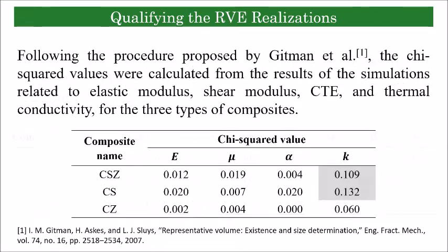Next, we ascertain the adequacy of the RVE size for predicting various thermomechanical properties. For this purpose, the chi-squared values are calculated according to the procedure suggested by Gitman et al. It was found that except for thermal conductivity of CS and CSZ, our realizations provide a reliable estimation of the effective properties within 95% confidence interval. For thermal conductivity of CS and CSZ, the results remain in 90% confidence interval.